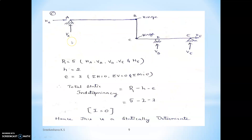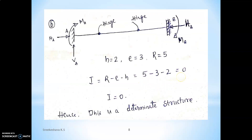Last problem: hinge support gives two reactions, another hinge gives two reactions, one additional reaction — total five external support reactions. Number of internal hinges = 2, equilibrium equations = 3. Using I = r - h - e: 5 - 2 - 3 = 0, hence this is also a statically determinate structure. These numerical problems using empirical relations cover the static indeterminacy of beam structures.